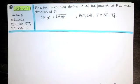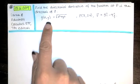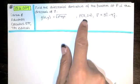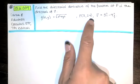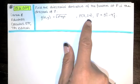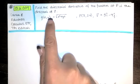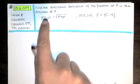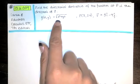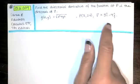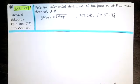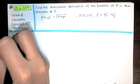We're asked to find the directional derivative of the function at P in the direction of V. We want to know the slope of this function at this location when X is equal to 7 and Y is equal to 24 — the slope of the surface given by this function at this location in this direction. In order to do that, we need to compute the directional derivative.